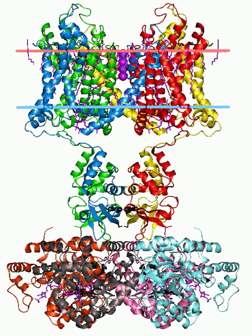Typically, vertebrate voltage-gated K+ channels are tetramers of four identical subunits arranged as a ring, each contributing to the wall of the transmembrane K+ pore. Each subunit is composed of six membrane-spanning hydrophobic alpha-helical sequences, as well as a voltage sensor in S4. The intracellular side of the membrane contains both amino and carboxy termini. The high-resolution crystallographic structure of the rat KV-α1.2/β2 channel has recently been solved, protein databank accession number 2A79, and refined in a lipid membrane-like environment.